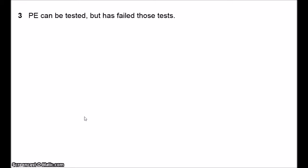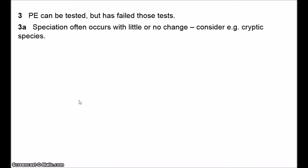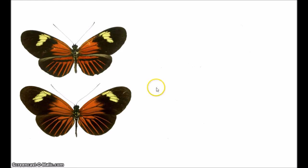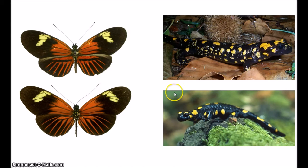A more serious charge is that punctuated equilibrium can be tested but has failed those tests. First, speciation often occurs with little or no morphological change. We know from organisms in the modern world that there are many cryptic species — species which look so similar that they were originally classed as the same species. Here are two different species of butterfly, and two different species of salamander from Wikipedia which look the same but are actually quite distantly related.